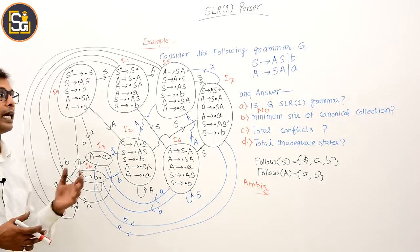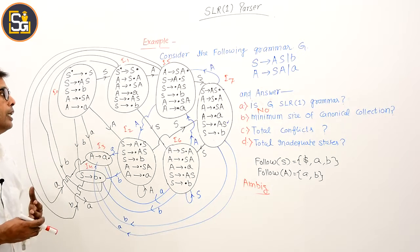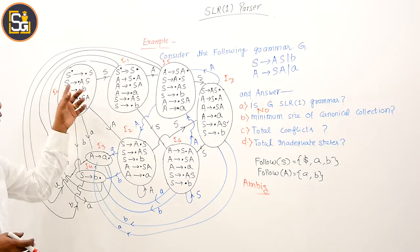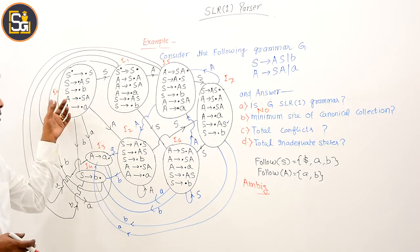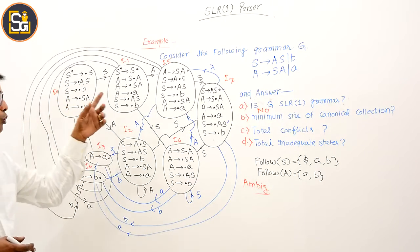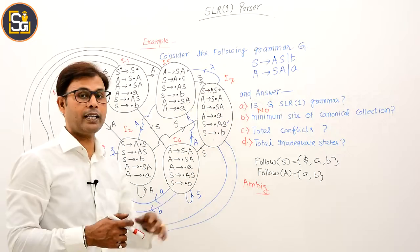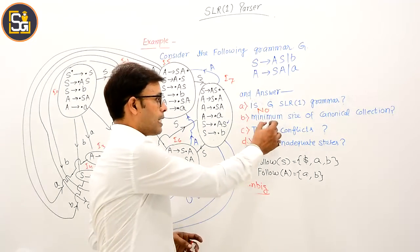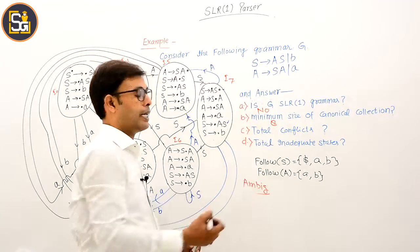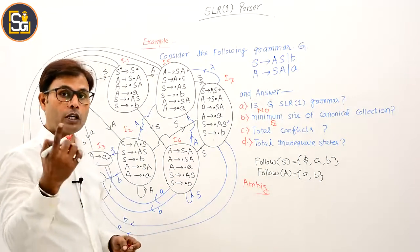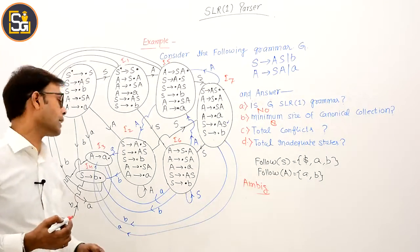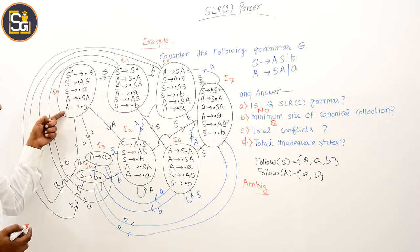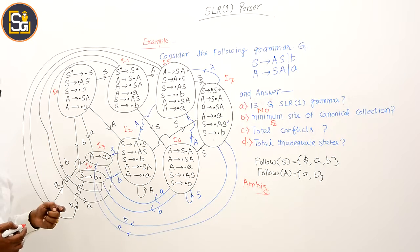The LR(0) automaton has been constructed. The total states range from I0 to I7, meaning the minimum size is 8 states. Now, looking at total conflicts — in state I0, there is no reduce move at all.